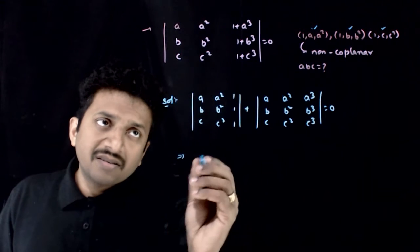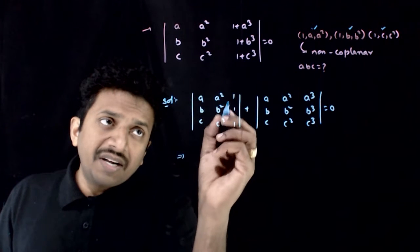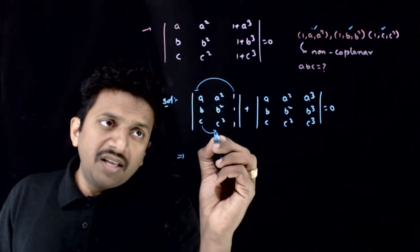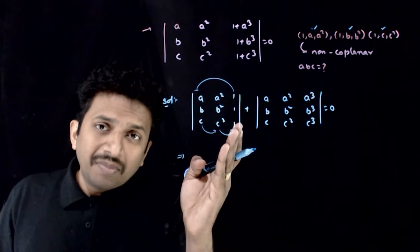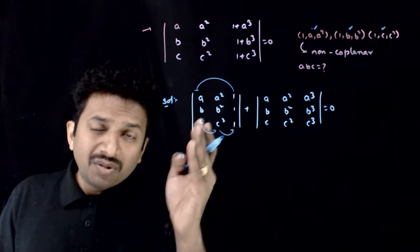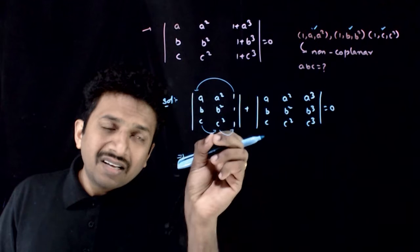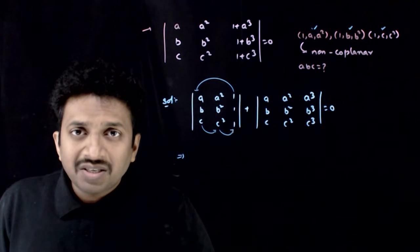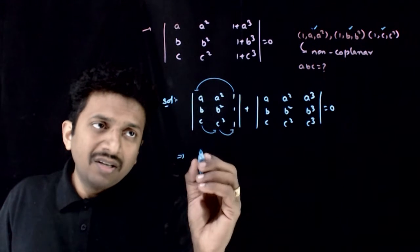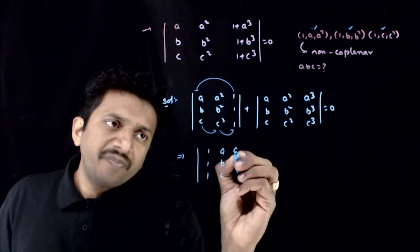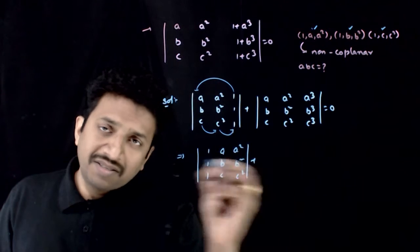Now this implies, so this can be written as, so I am taking 1, 1, 1 here, A, B, C here, A square, B square, C square here. I am bringing C1, C3 to C1, C1 to C2 and C2 to C3. So, this cyclic changing of columns does not change the three by three determinant. So, this is same as 1, 1, 1, A, B, C, A square, B square, C square plus.